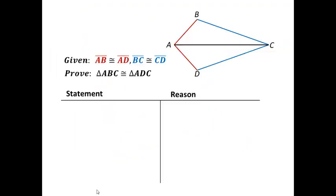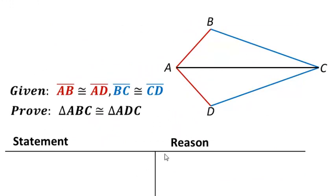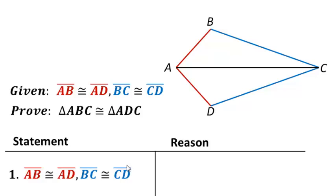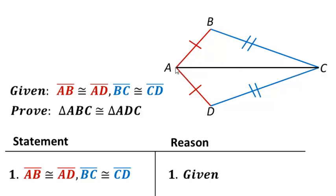Let's see how we would use the side-side-side postulate in a proof. Let's say that we're given that segment AB is congruent to segment AD and segment BC is congruent to segment DC — that is given. I'm specifically trying to prove that triangle ABC is congruent to triangle ADC. Right now we have two sets of corresponding sides that are congruent, but we need three.